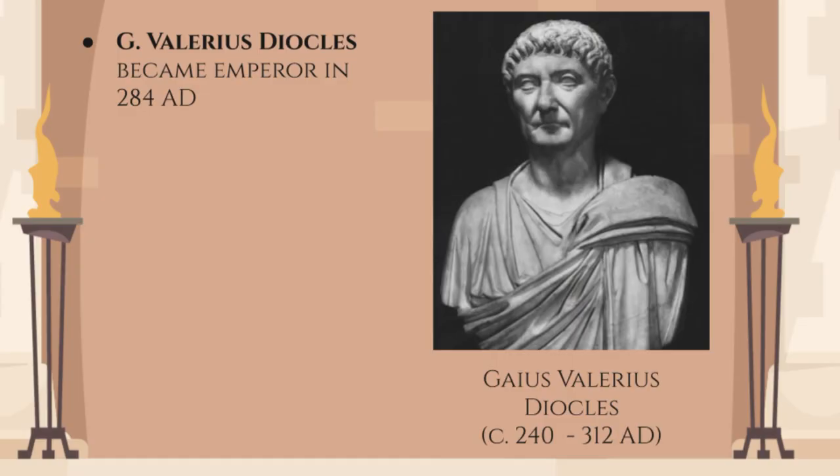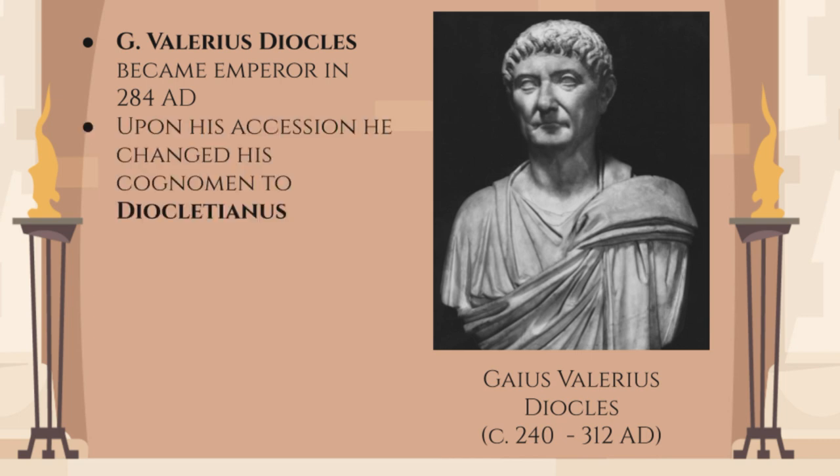In 284 AD, a cavalry commander, Gaius Valerius Diocles, became the Roman Emperor. His name didn't fit his new office — Diocles was a dead giveaway that the man was a low-born provincial. This is why he changed his name to Diocletianus, the man we now know as the Emperor Diocletian.